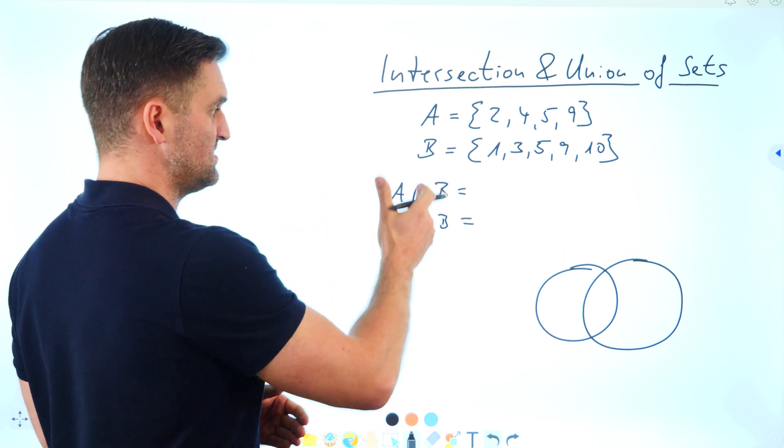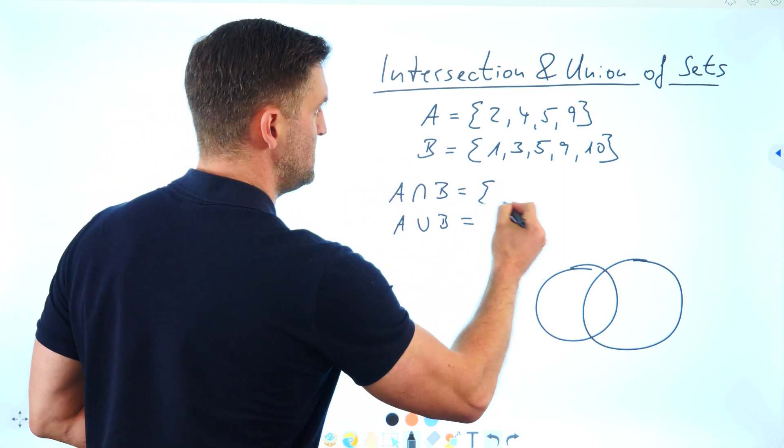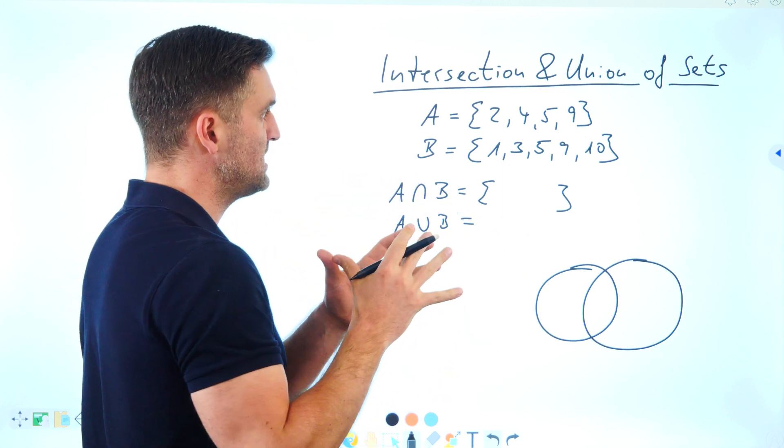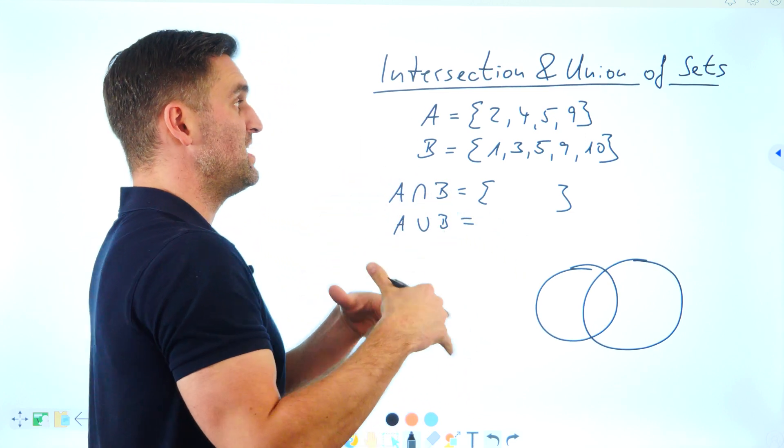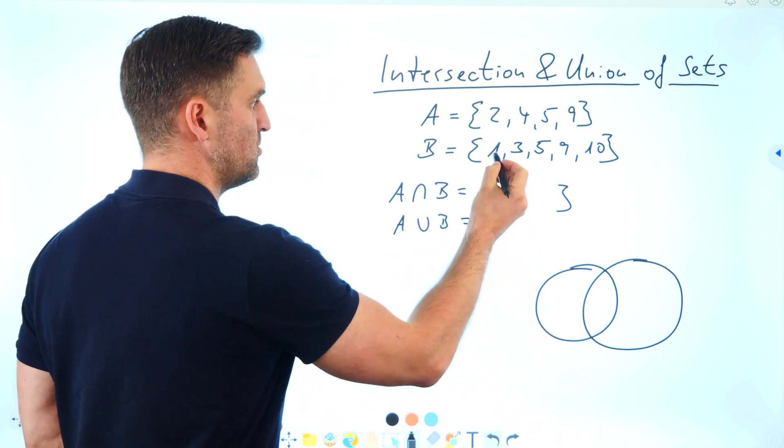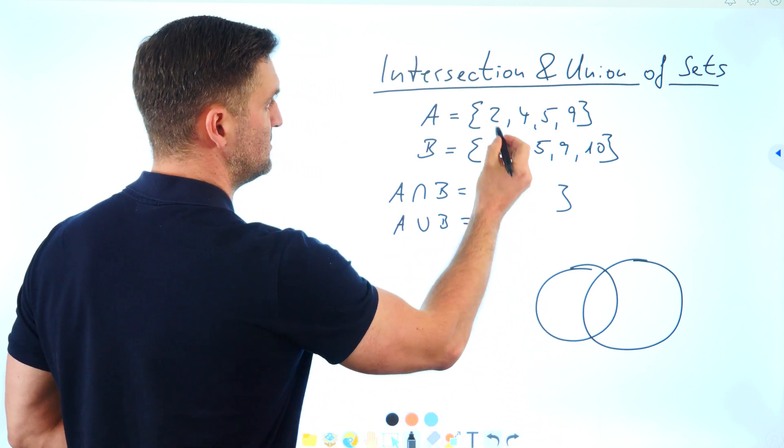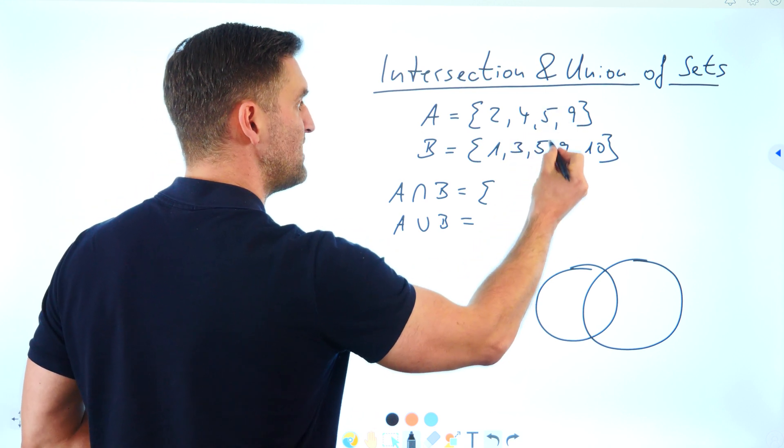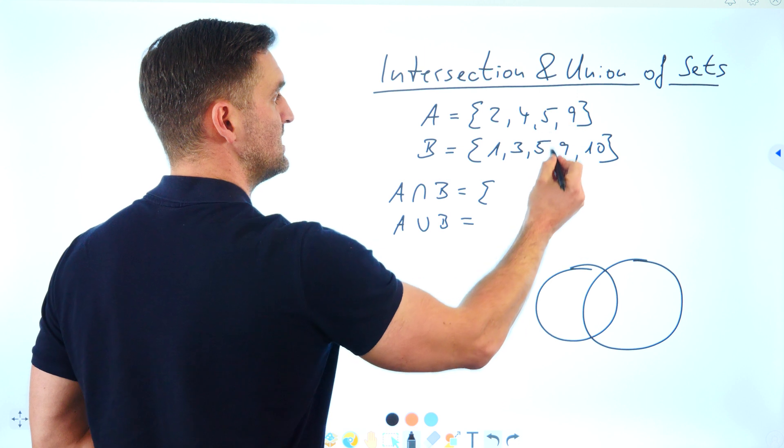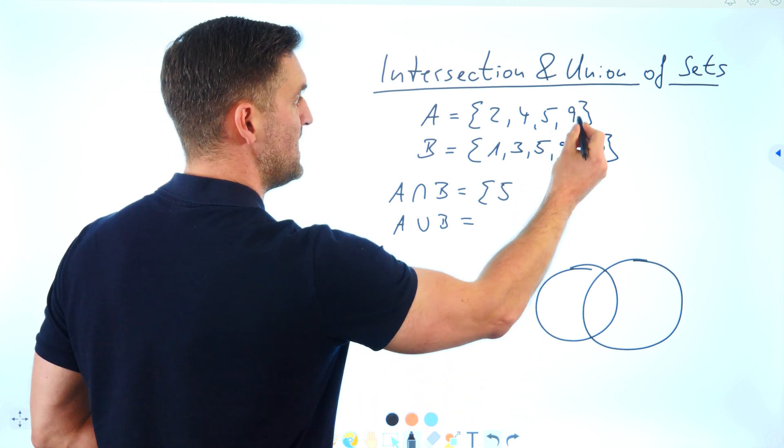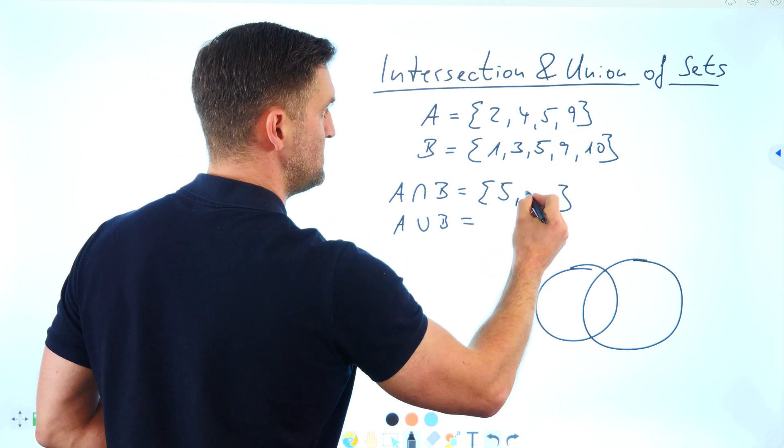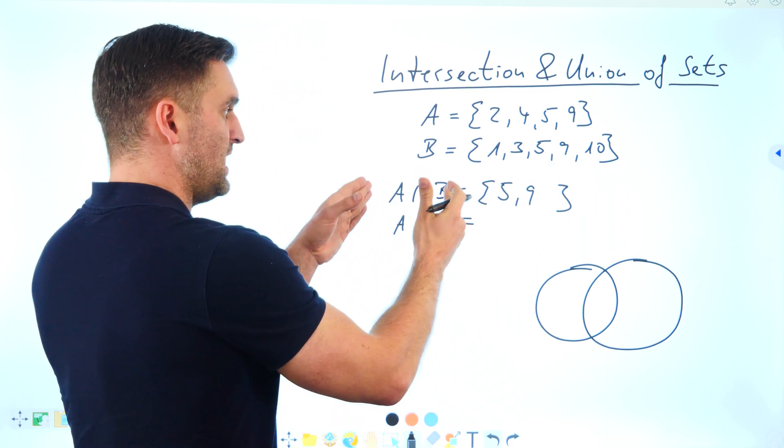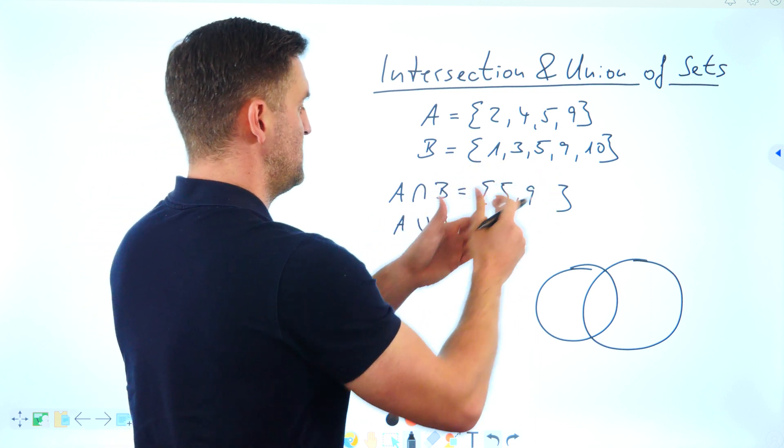The intersection of set A and B would be the elements that are both in A and B. So 1 is only in set B, 2 is only in set A, 3 is only in set B, 4 is only in set A, 5 is in set A and B, 9 is in set A and B, 10 is only in set B. So the intersection of A and B would be 5, 9.